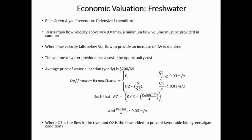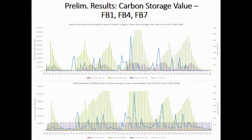Looking at our results over the historic climate for flow bands one, four, and seven: the blue represents environmental water delivery. You can see that with a big flow — take for example the 1956 flood — we expect to see an increase in tree health and as a result an increase in carbon storage value, which we can value on the market. Looking at the bottom pane with a 20% reallocation, we can see that in some cases we really avoid those troughs — we're keeping tree health greater by providing flood at the desired return interval.